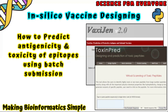Bismillah. Assalamu alaikum, welcome to my YouTube channel Science for Everyone. Today's video is related to in silico vaccine designing. The title of today's video is how to predict antigenicity and toxicity of epitopes using batch submission. This video is related to the VaxiJen tool and ToxinPred tool, and these two databases are used to predict the antigenicity and toxicity of epitopes.